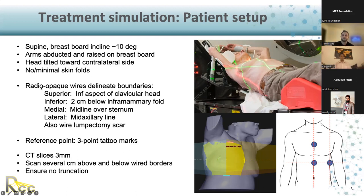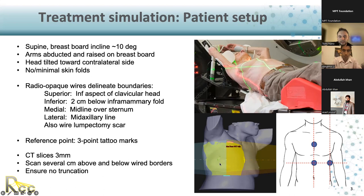Ben went through placement of the wires, and that's what's shown here in this 3D rendering of the patient surface. You can see the superior wire, the inferior wire, medial, lateral, and even a wire where the lumpectomy scar is, and also the field of view of these breast tangents. A dosimetrist or physicist at treatment planning tries to match the field to these wires, which is why they're very important and what we use to guide planning.